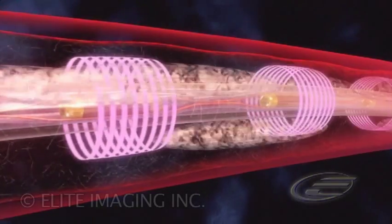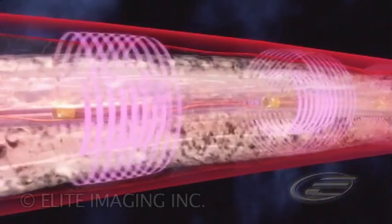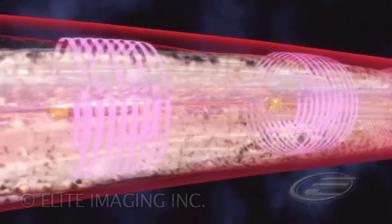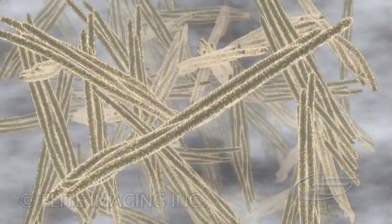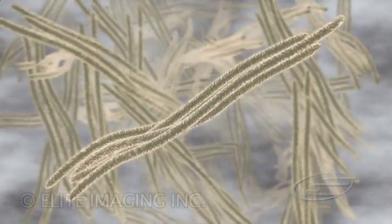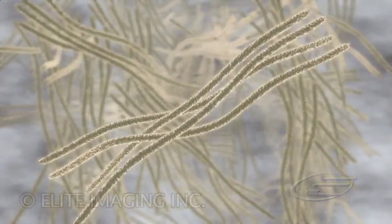Activation of the lysis system increases permeability of the clot and generates radial pressure driving drug into the inner volume of the clot. Simultaneously, aggregates of fibrin disassociate into individual strands.